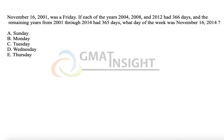November 16, 2001 was a Friday. Each of the years 2004, 2008, and 2012 had 366 days — in normal terminology, we call them leap years. Generally, leap years are years that are multiples of 4 but not multiples of 100. The other years from 2001 through 2014 have 365 days. Then what day of the week was November 16, 2014?